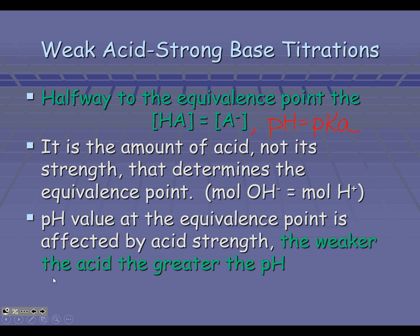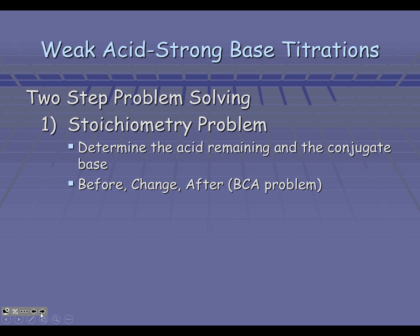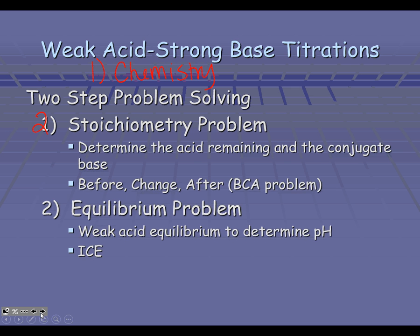These are basically three-step problems. First: what's the chemistry that's happening? Think about that balanced equation. Second: when the base combines with the acid, work the BCA. And then finally, there's some type of equilibrium problem that has to occur — either ICE with a small K, or our good friend Henderson-Hasselbalch whenever we have HA and A minus present.